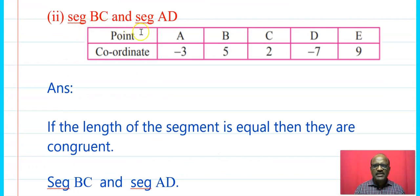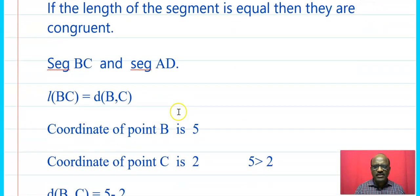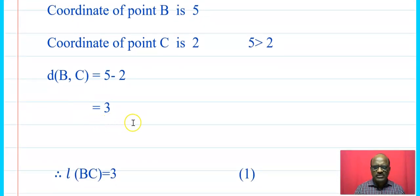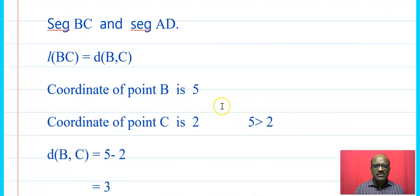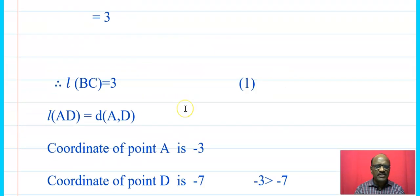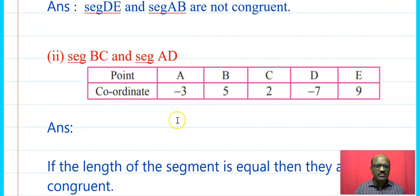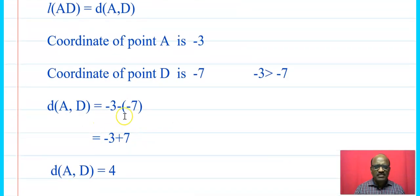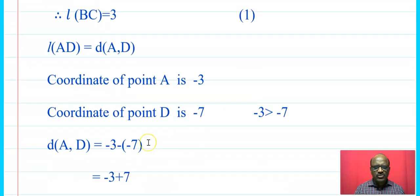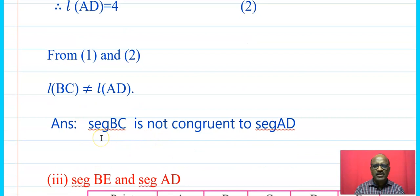Next, segment BC and segment AD. Coordinate of B is 5, coordinate of C is 2; since 5 > 2, distance BC = 5 - 2 = 3. For AD: coordinate of A is -3, coordinate of D is -7; distance AD = -3 - (-7) = -3 + 7 = 4. Length BC = 3 and length AD = 4, therefore segment BC is not congruent to segment AD.